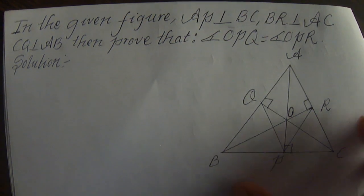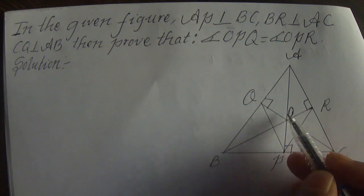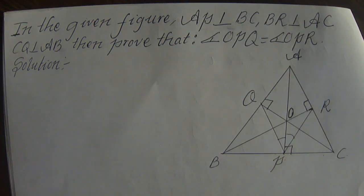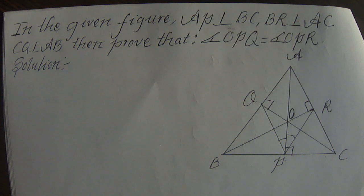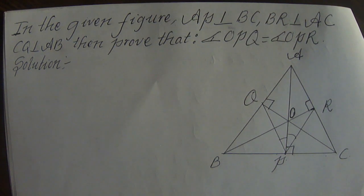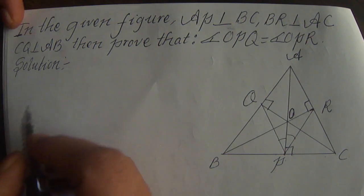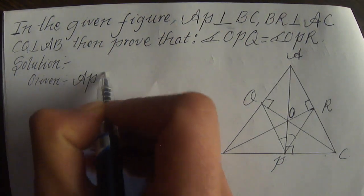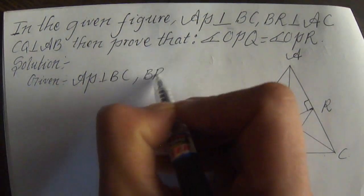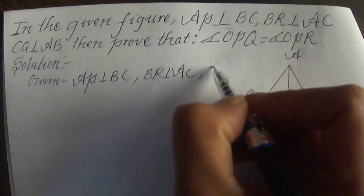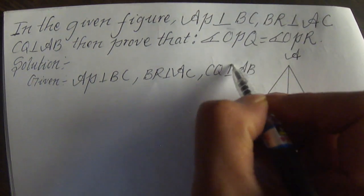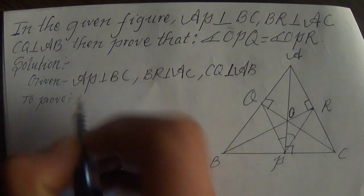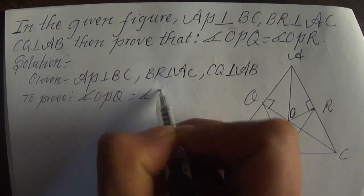We need to prove that angle OPQ is equal to angle OPR. AB is perpendicular to BC. BR is perpendicular to AC; CQ is perpendicular to AB. We need to prove — proof — that angle OPQ is equal to angle OPR.